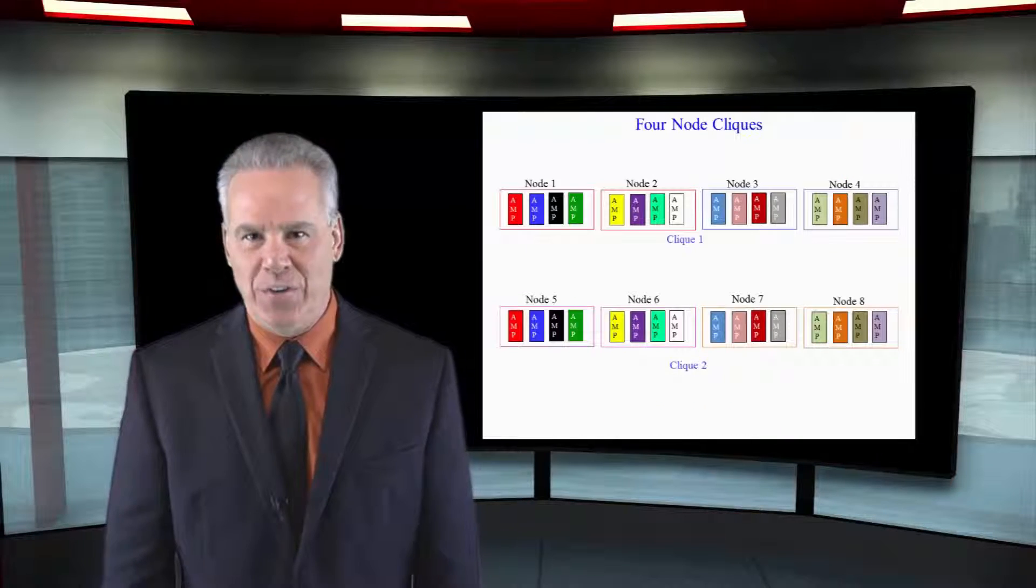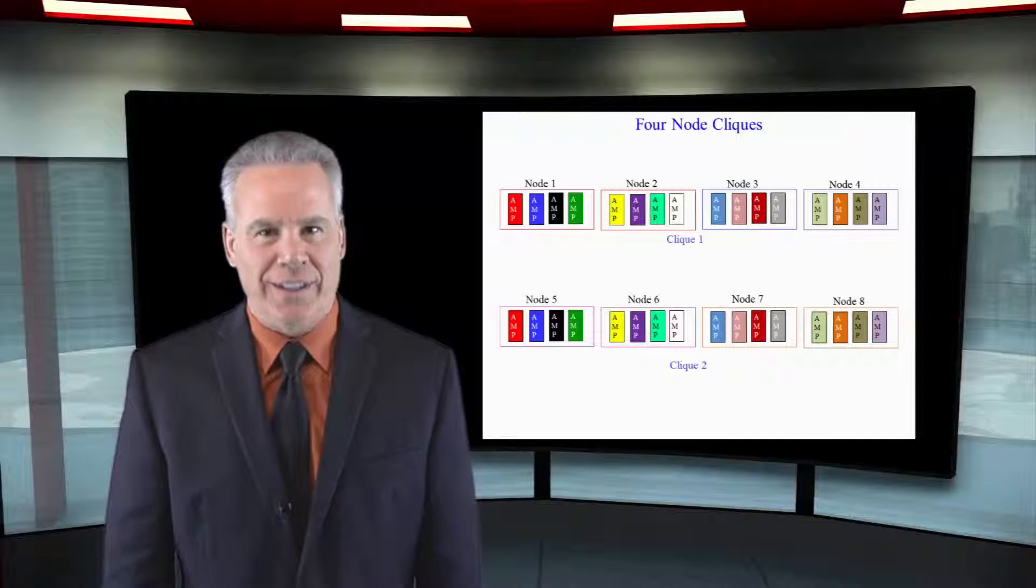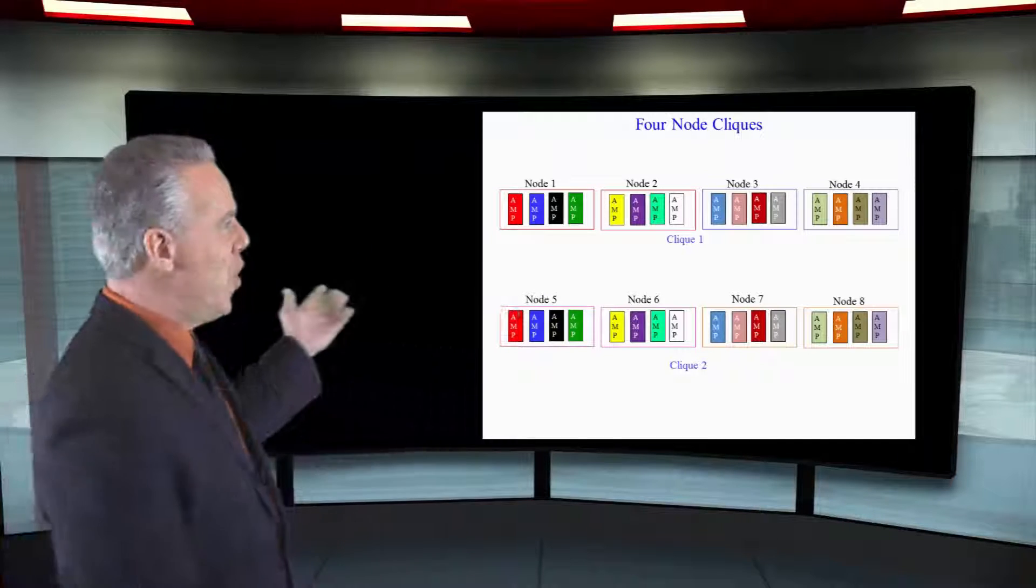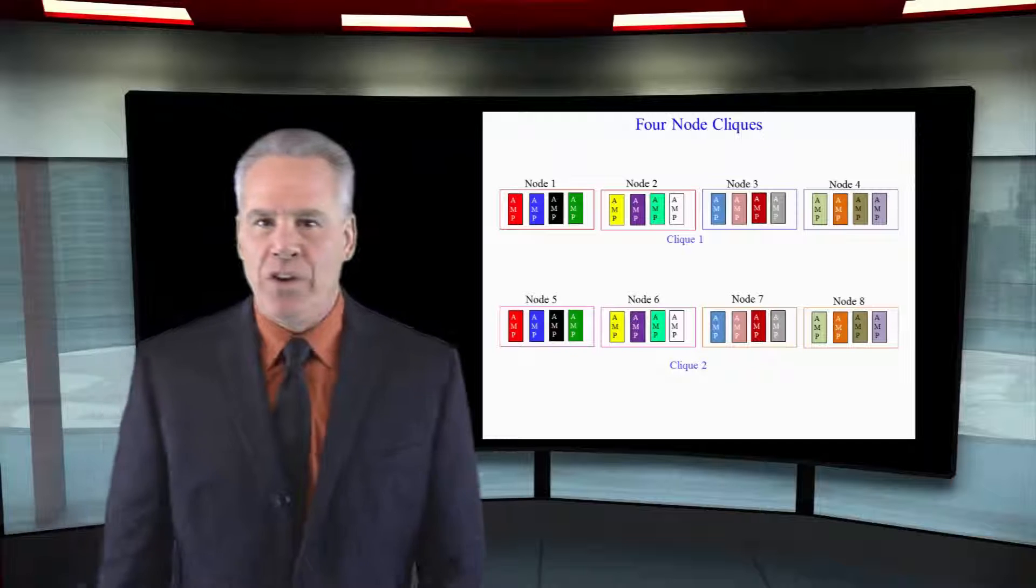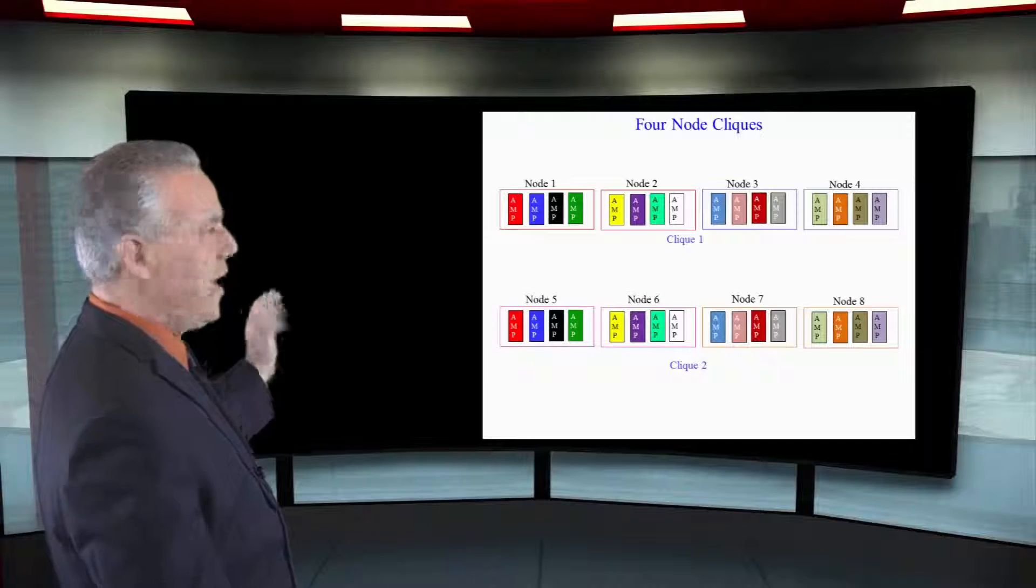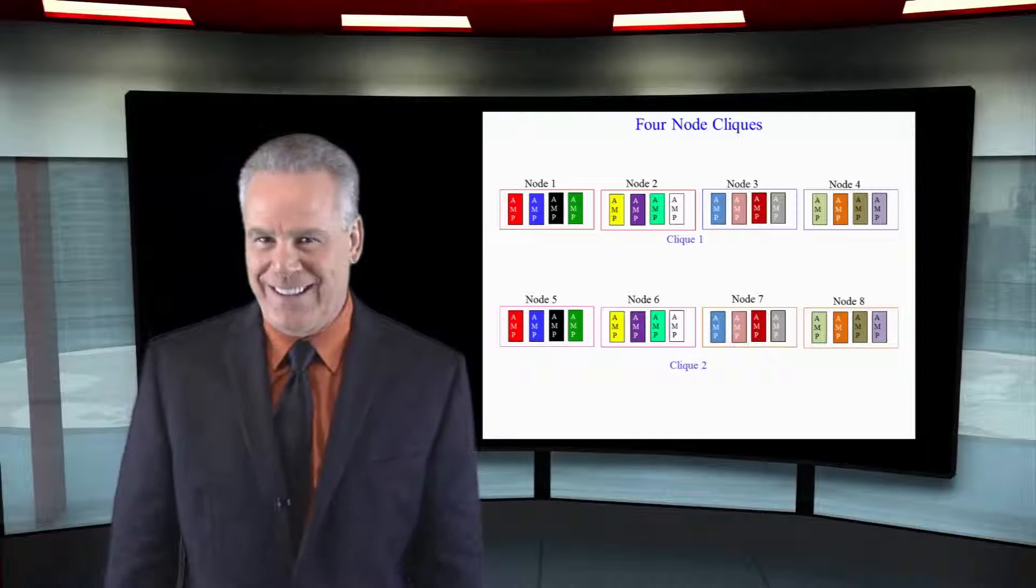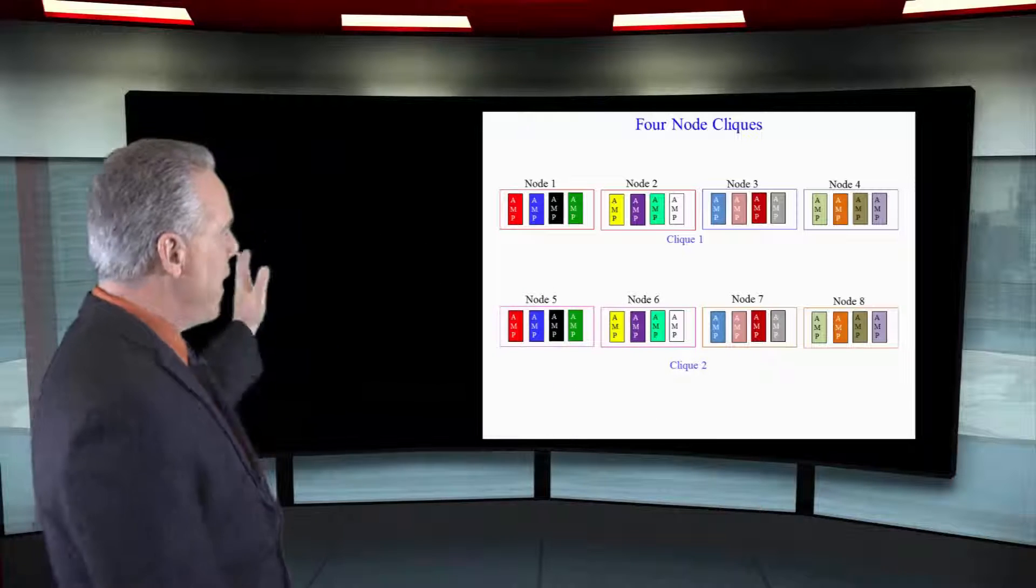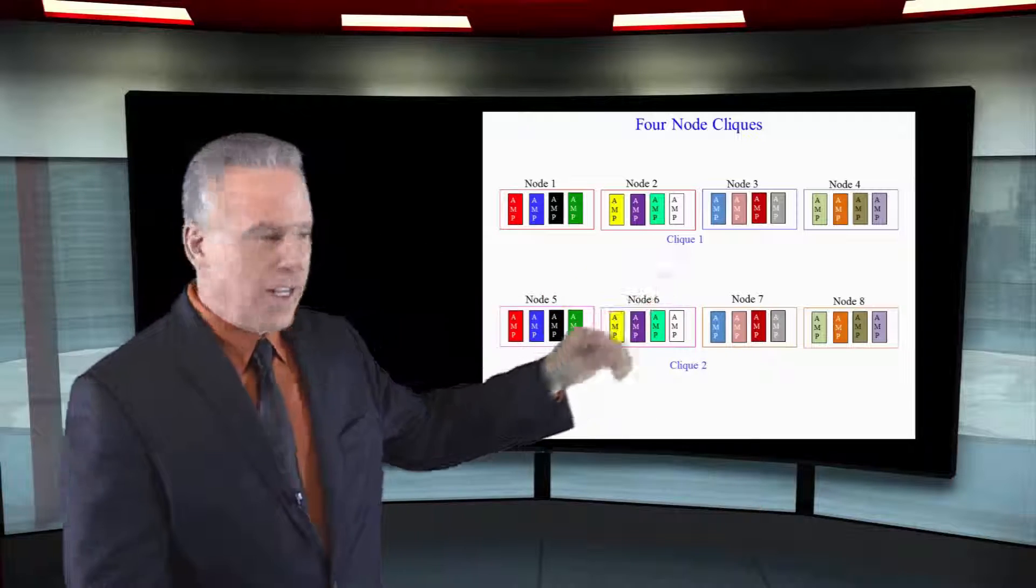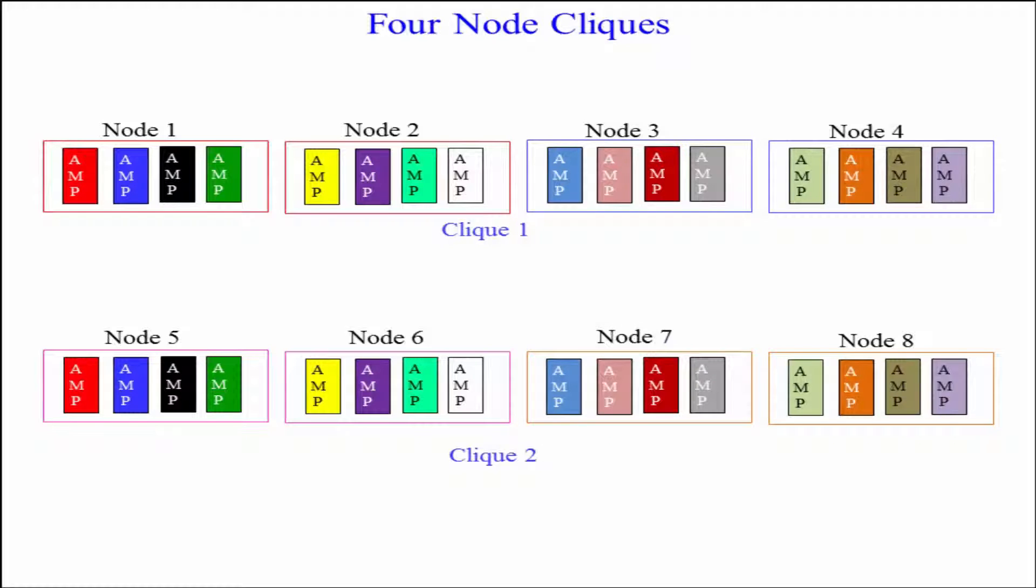Here's another configuration for your clique. Here we have our eight nodes again, and I want you to notice the two red amps, those are clustered together for fallback purposes. Now, we've got four nodes in the first clique, four nodes in the second clique. Why might we do this?